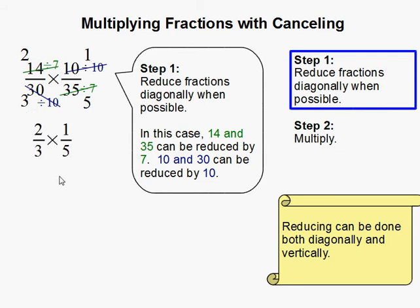So our new multiplication problem is now 2 over 3 times 1 over 5. And this makes it a lot easier since the numbers we're dealing with are smaller.